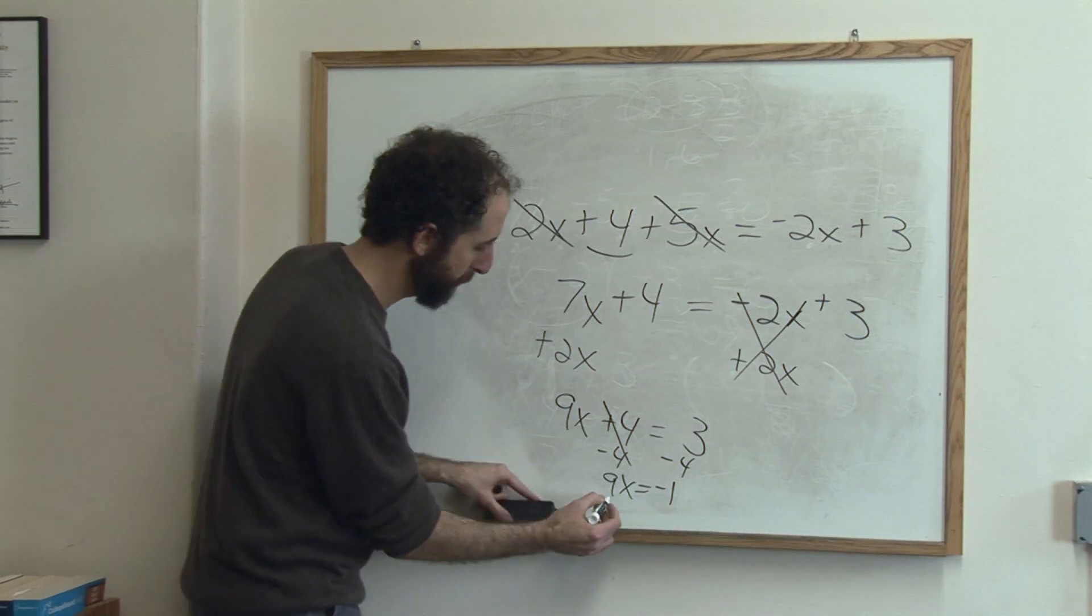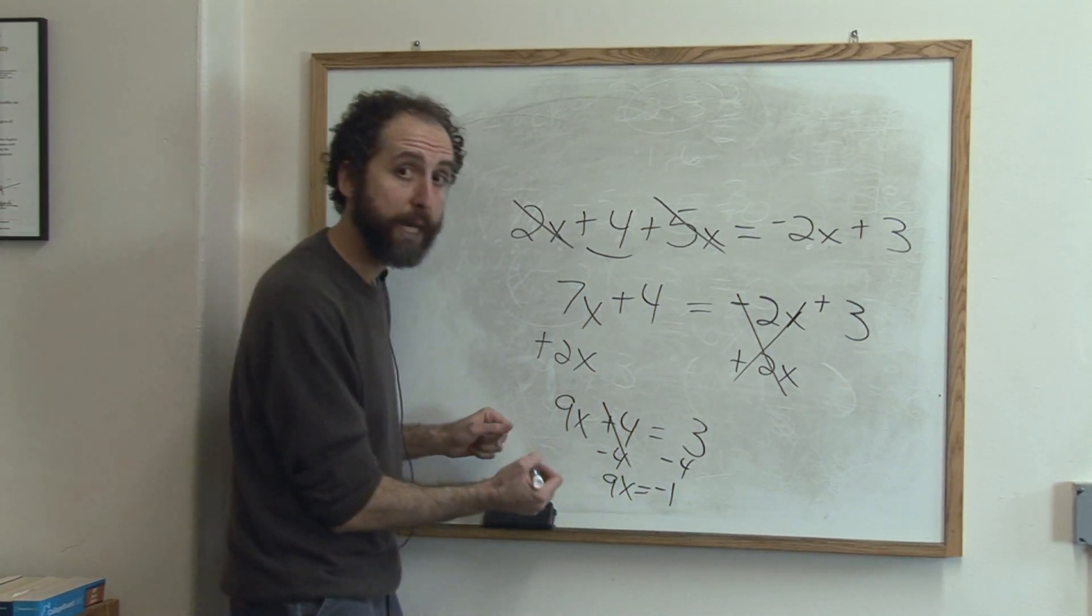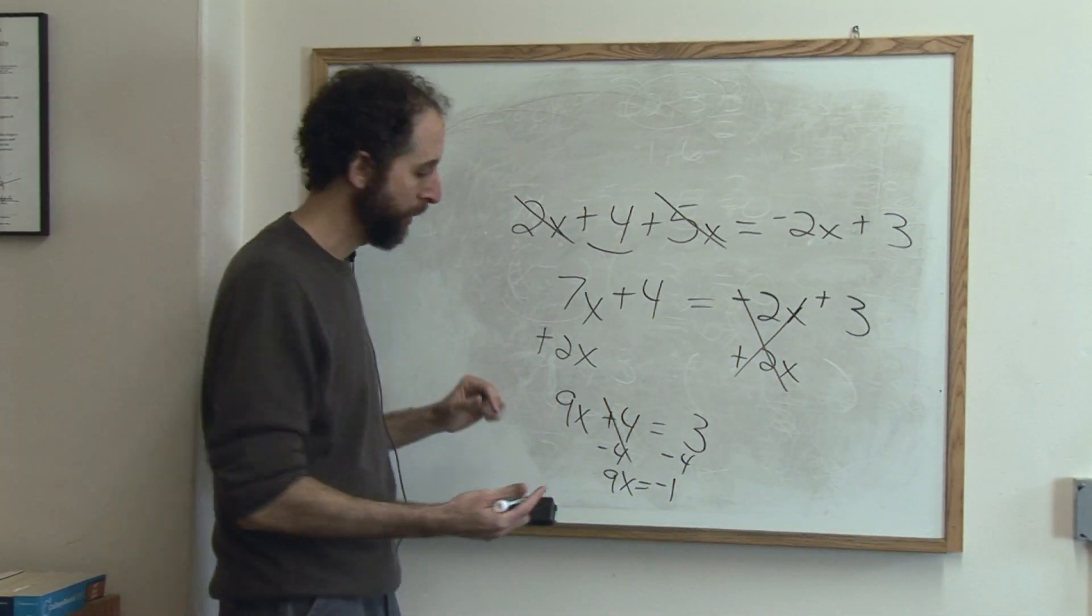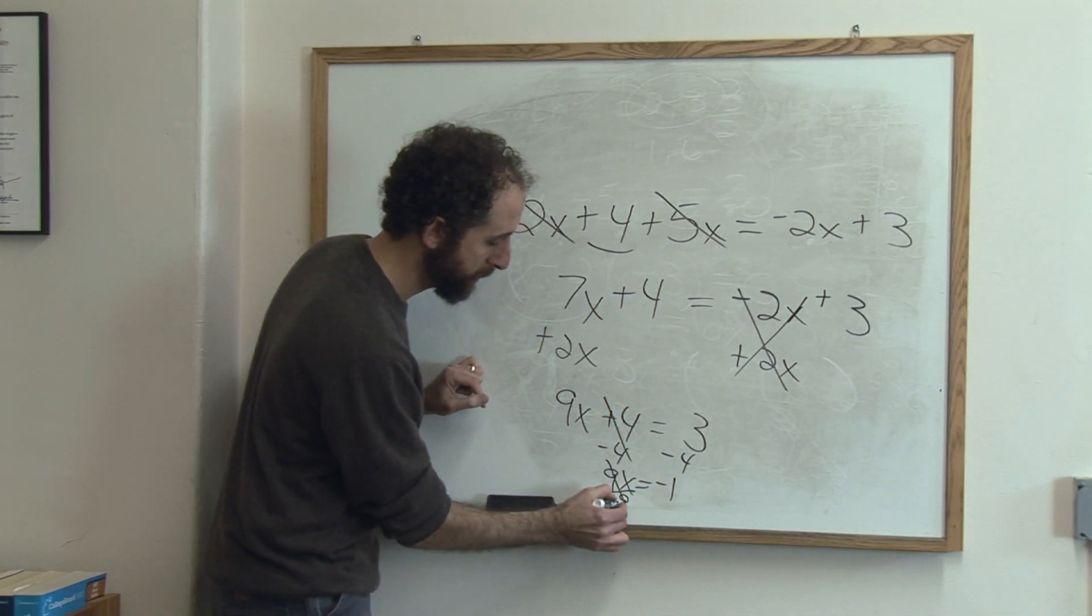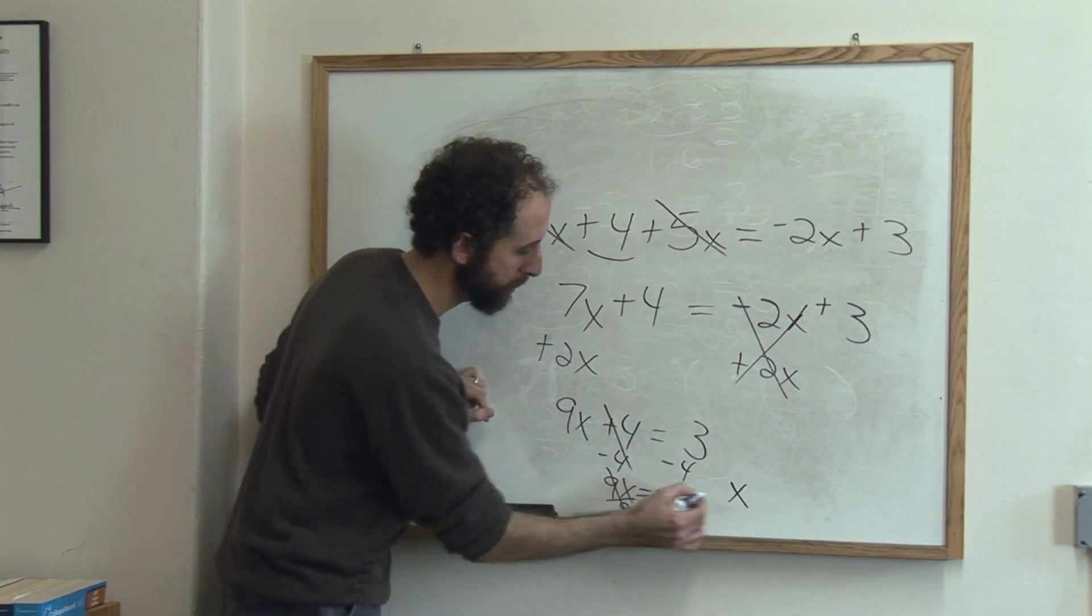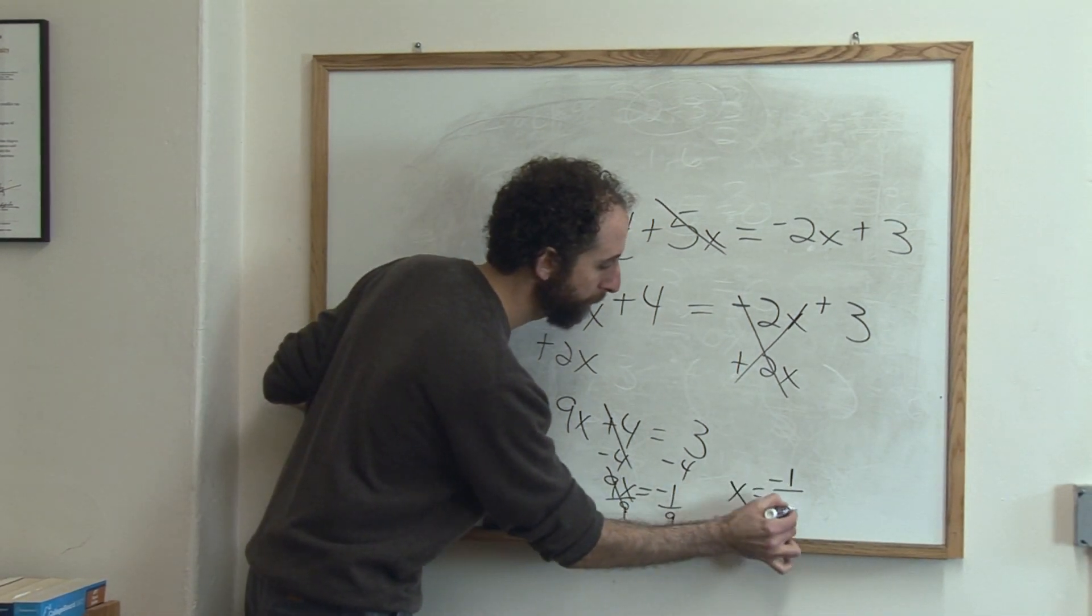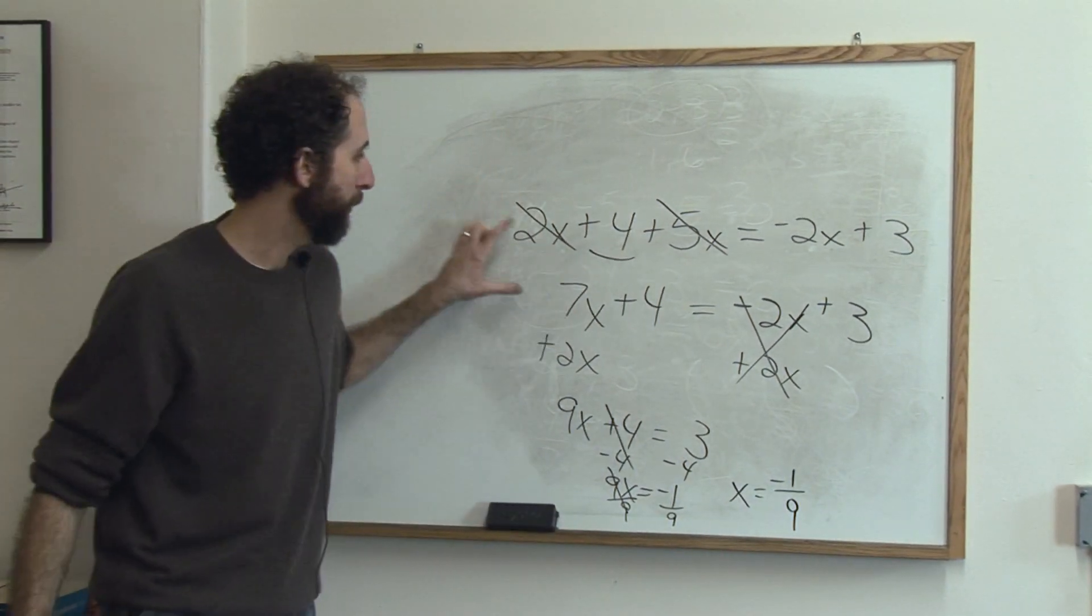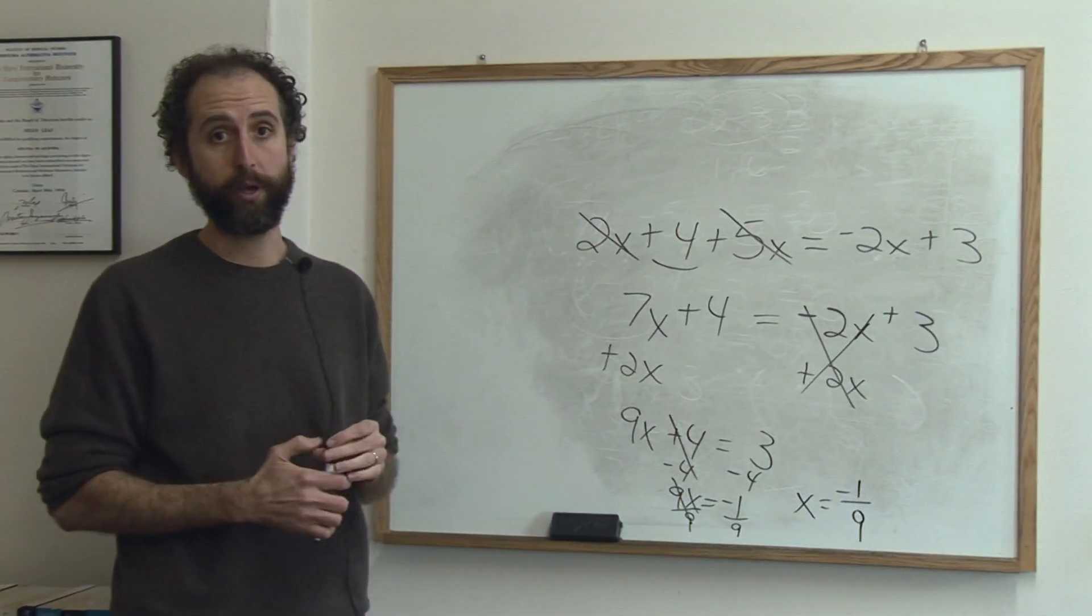Last step here at the bottom of the board, we're going to divide both sides by 9 because we want to get x alone. So if we divide by 9, the 9's cancel, giving me x by itself. Got to do the same thing here, equals negative 1 ninth, final answer. So in this equation, x equals negative 1 ninth.